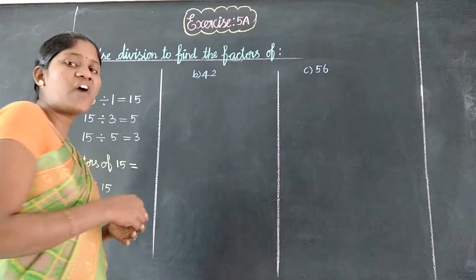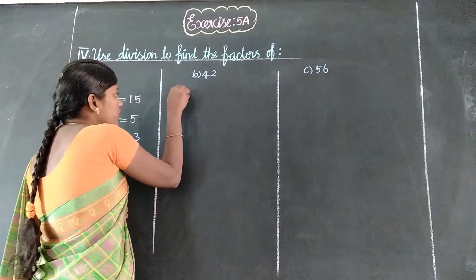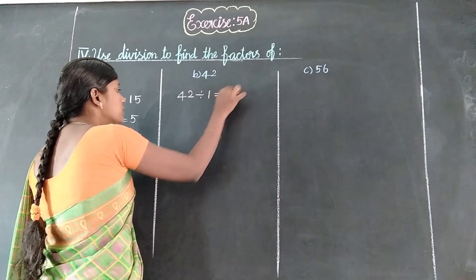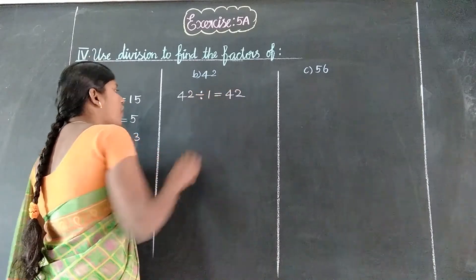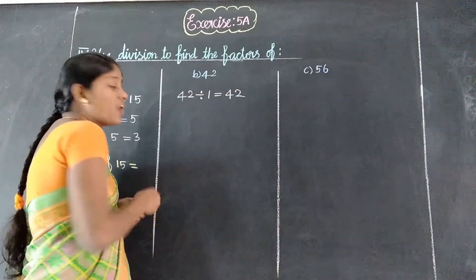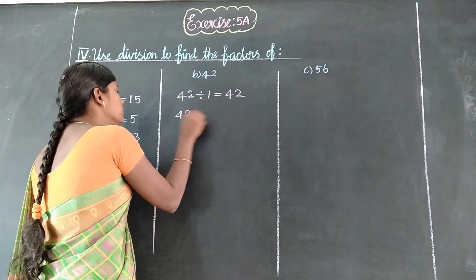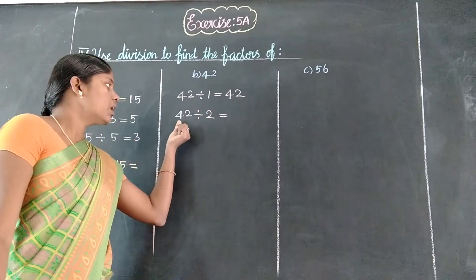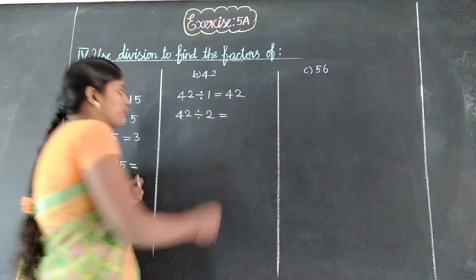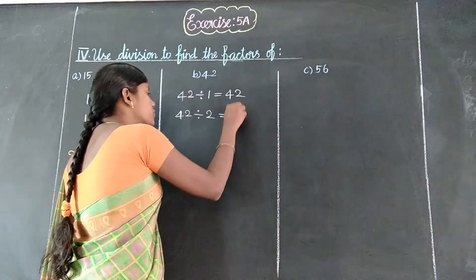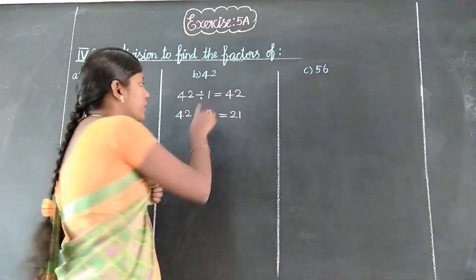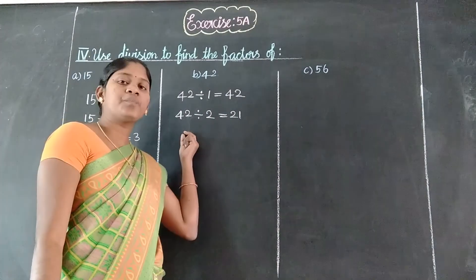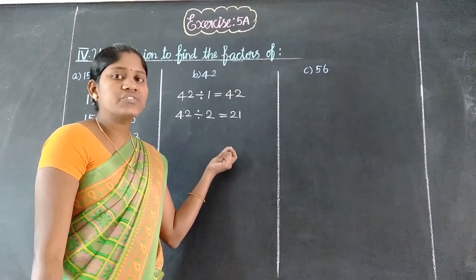Next we do 42, put the same method. First, 42: 1 table — 1 divided by 1 equals 42. Next, 42 divided by 2: how many 2's are in 42? 21 twos are 42. So 42 divided by 2, the answer is 21.